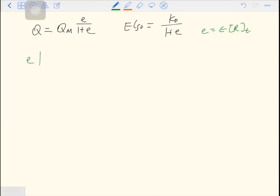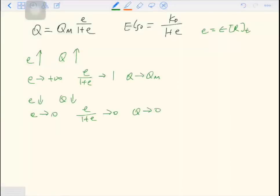Now we have to do the routine analysis. When E increases, Q increases. When E goes to positive infinity, E over 1 plus E approaches 1, and Q approaches Qm. When E decreases, Q decreases. When E approaches 0, E over 1 plus E approaches 0, and Q approaches 0, and this is an antagonist.